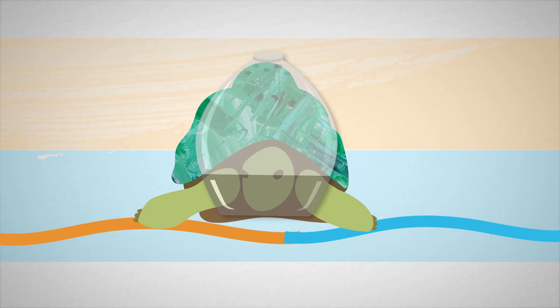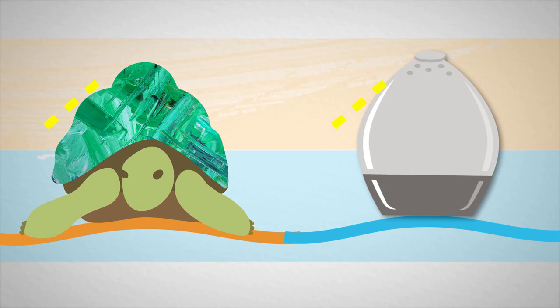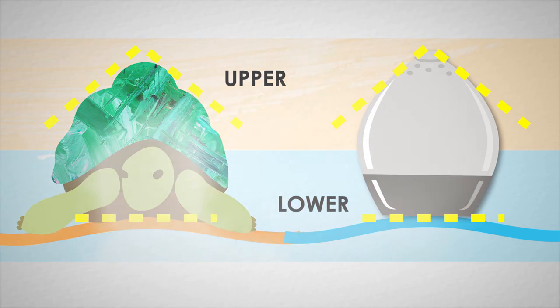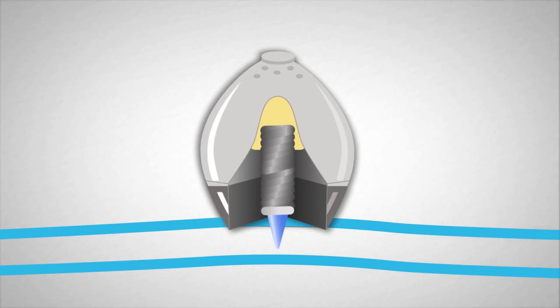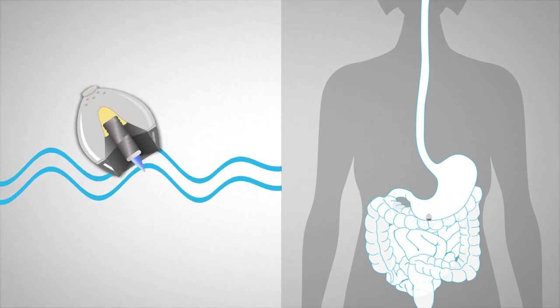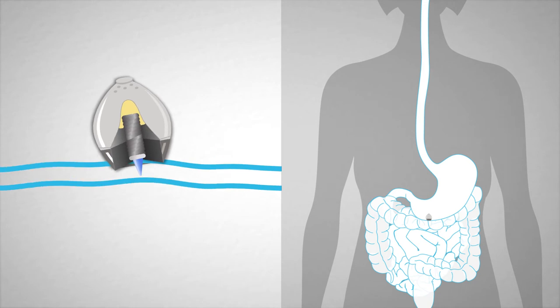Both the tortoise shell and the SOMA possess upper portions with pointed tops and lower portions with level bottoms. The high-curvature body allows the device to reorient itself utilizing gravity alone. The flat base ensures that the SOMA does not tip over when moved by stomach contractions.